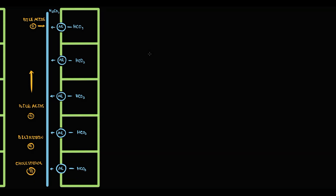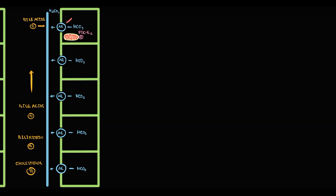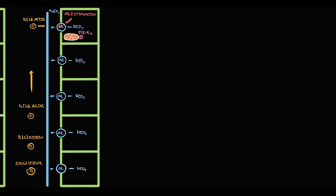Like most cells in our body, intrahepatic biliary cells have mitochondria, and on the surface of the mitochondria is located a specific protein called pyruvate dehydrogenase complex E2. Sometimes anion exchanger 2 does not function properly — this can be caused by a mutation from birth, or this dysfunction can develop during life. In these circumstances, biliary epithelial cells cannot provide secretion of bicarbonate and thereby cannot create a protective bicarbonate layer.